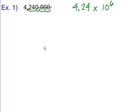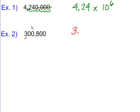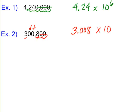Example two: 300,800. Following the same idea, we use the 3 in front of the decimal. The interior zeros we need to keep because they are placeholders — the 8 is two places away from the 3, so those zeros maintain that relationship. We don't keep the trailing zeros. Multiply by base 10, and counting the places — 1, 2, 3, 4, 5 — gives us 3.008×10⁵.